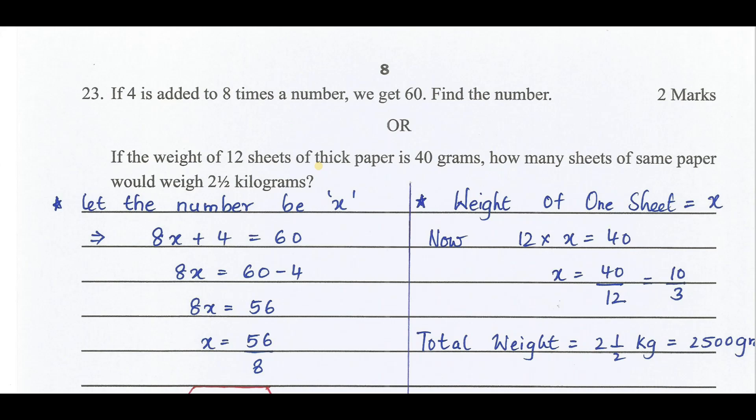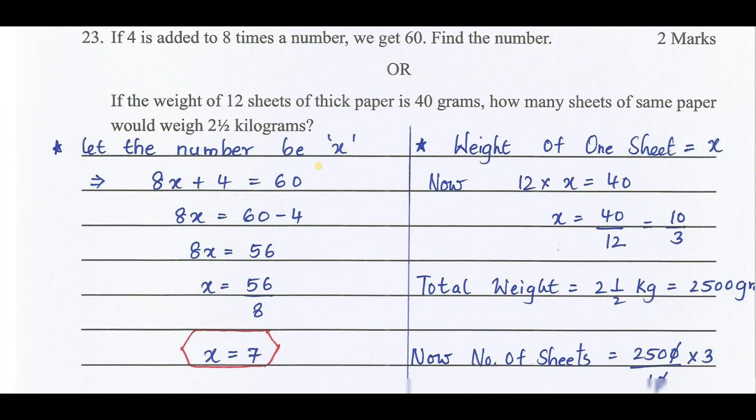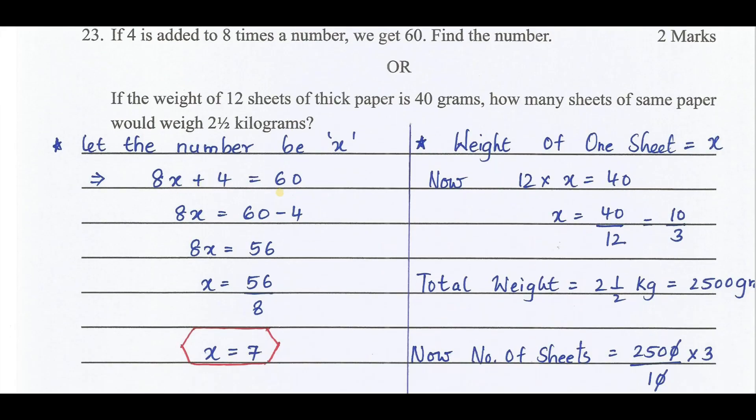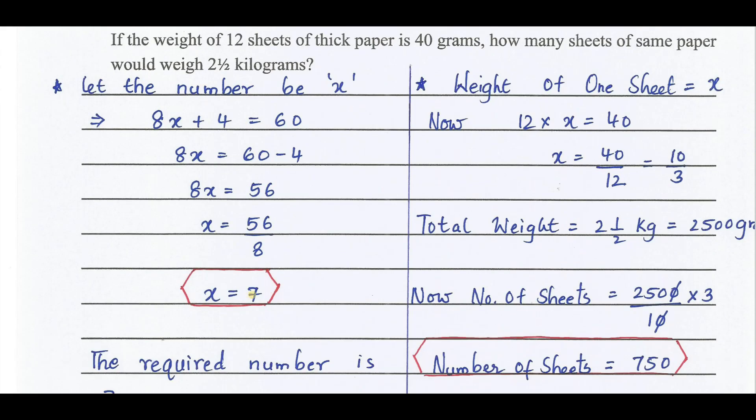4 is added to 8 times a number, we get 60. Let the required number be x. 8 times x plus 4 equals 60. 8x equals 60 minus 4. 8x equals 56. x equals 56 by 8. x equals 7.